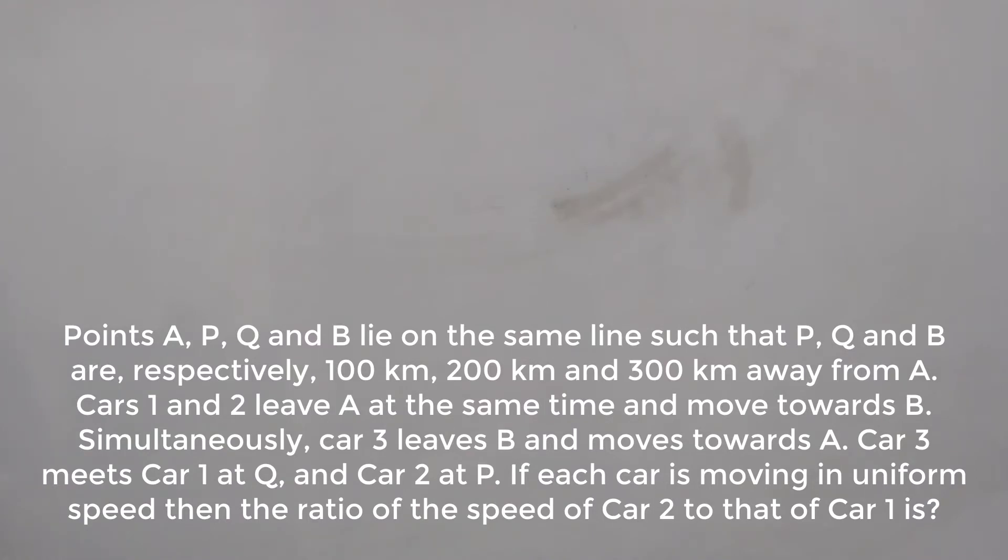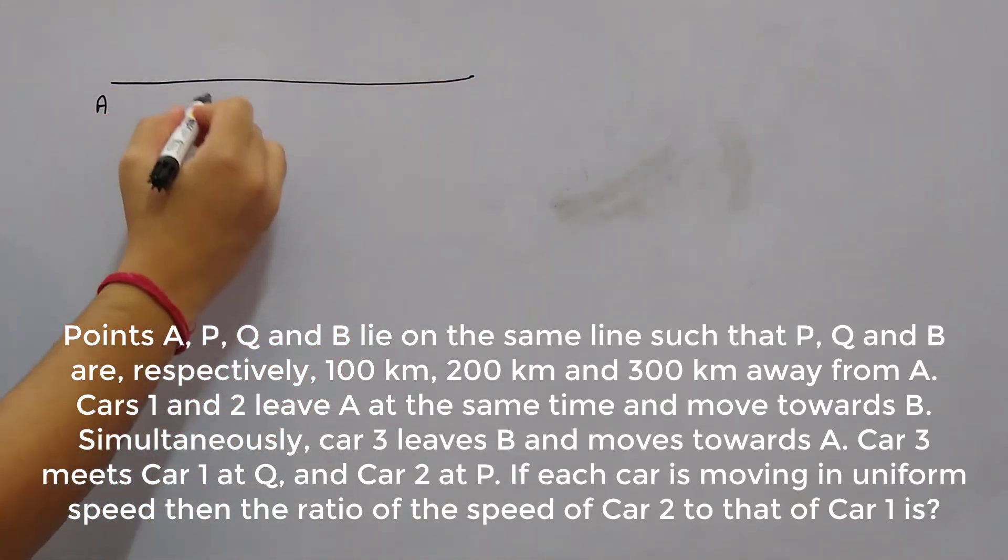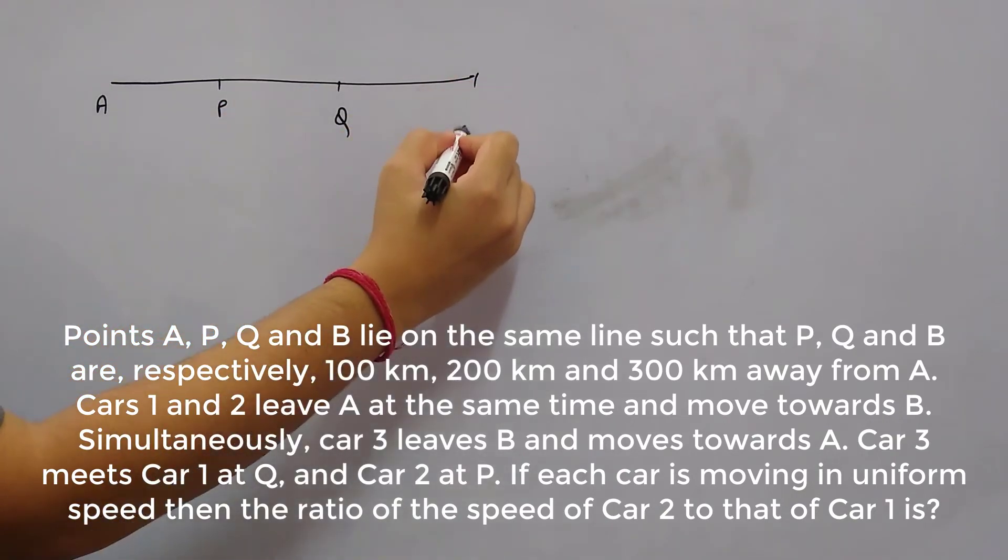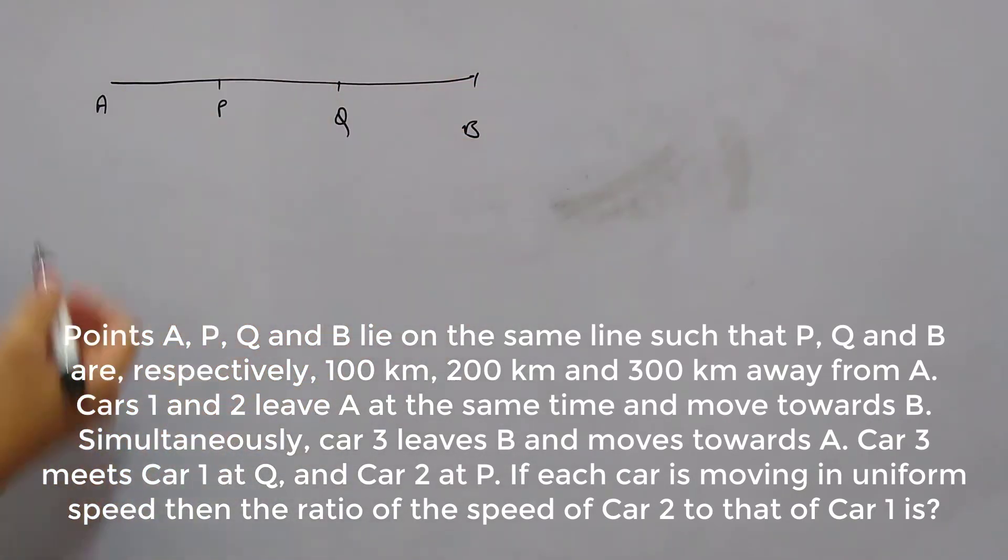Points A, P, Q and B lie on the same line such that P, Q and B are respectively 100, 200 and 300 kilometers away from A. So we have three points, let's say this is A and then we have P, Q and B on the same line. The distances given are: AP is 100 kilometers, AQ is 200 kilometers and AB is 300 kilometers.